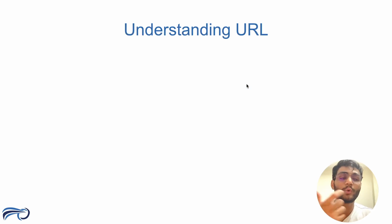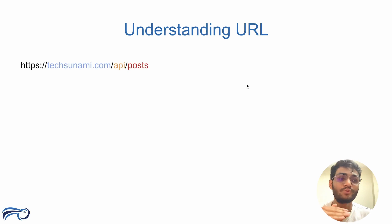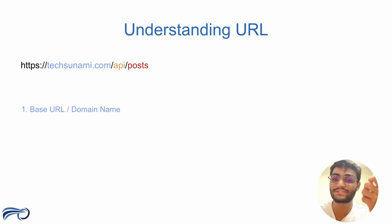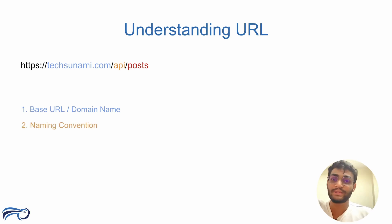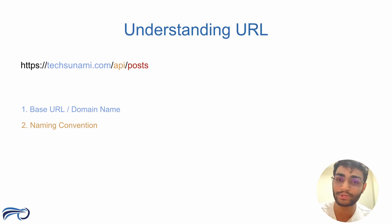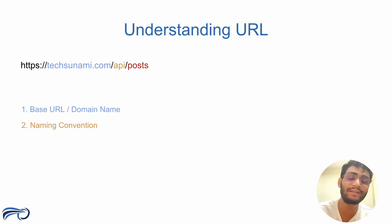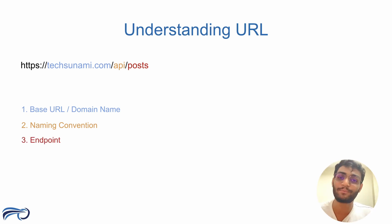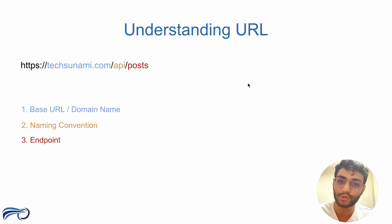Now let's understand the URL structure and how URLs are formed for APIs. The base URL or domain name is the first part of the API URL. Then '/api' is a naming convention — it is not mandatory, but it is proper guideline practice. When you write '/api', it indicates there is an API being forwarded there. The third part is the endpoint — for example, '/posts' indicates that this endpoint will give data related to posts.